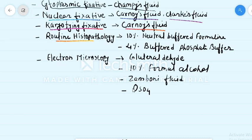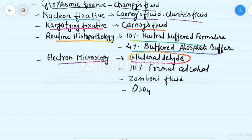In routine histopathology, 10% neutral buffered formalin and 4% buffered phosphate are used. In electron microscopy, glutaraldehyde is mainly used — it is the best and most commonly used. Other fixatives include 10% formal alcohol, Zomboni fluid, and osmium tetroxide. These are the fixatives used in pathology.